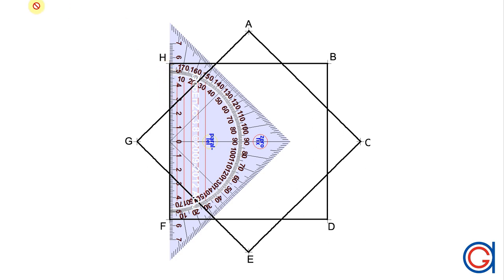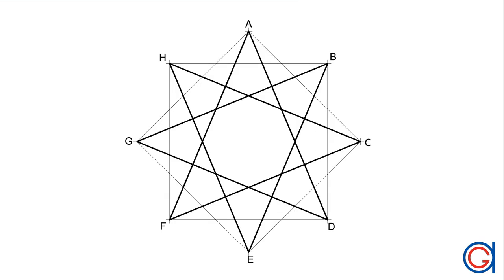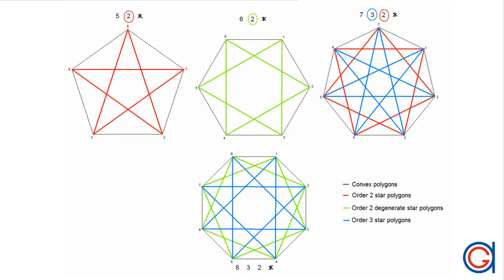So now we have completed our order two star octagon. Click this link if you want to learn how to draw an order three star octagon. By pressing the following link, it shows you how to draw regular star-shaped polygons with any number of sides, and it also explains their mathematical theory.